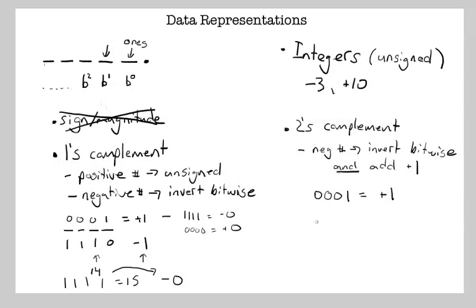That is equal to positive one. And if we want to make a negative one, we invert that, so one, one, one, zero, and then we add one to it.